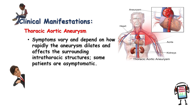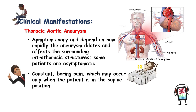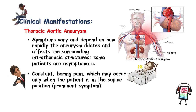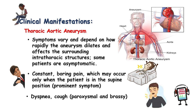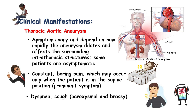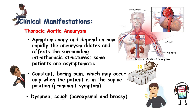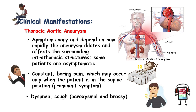Clinical manifestations of thoracic aortic aneurysm: symptoms vary and depend on how rapidly the aneurysm dilates and affects surrounding intrathoracic structures. Some patients are asymptomatic. A constant boring pain, which may occur only when the patient is in the supine position, is a prominent symptom. Dyspnea — difficulty breathing or shortness of breath — may also occur, along with paroxysmal and brassy cough. Paroxysmal cough is characterized by intermittent attacks of violent coughing; brassy cough is a loud metallic barking cough associated with subglottic edema.